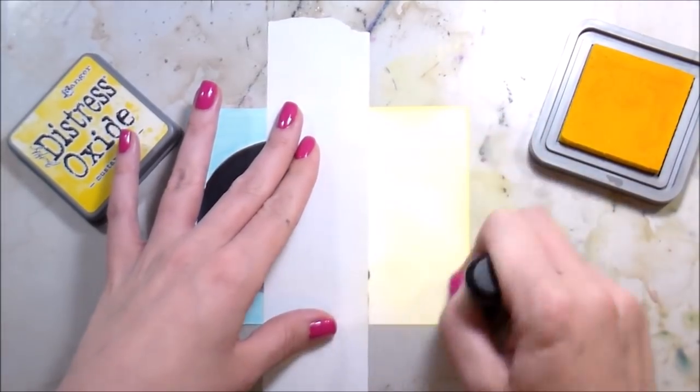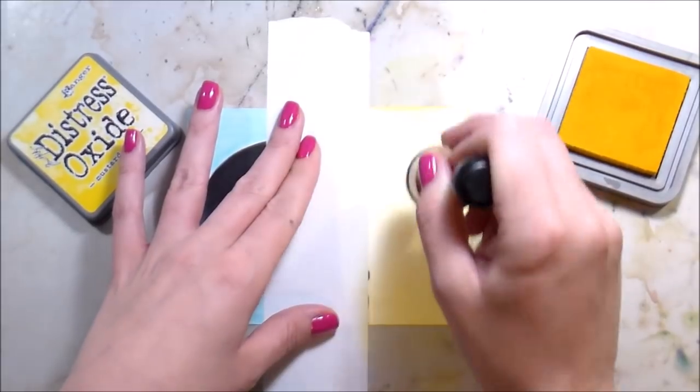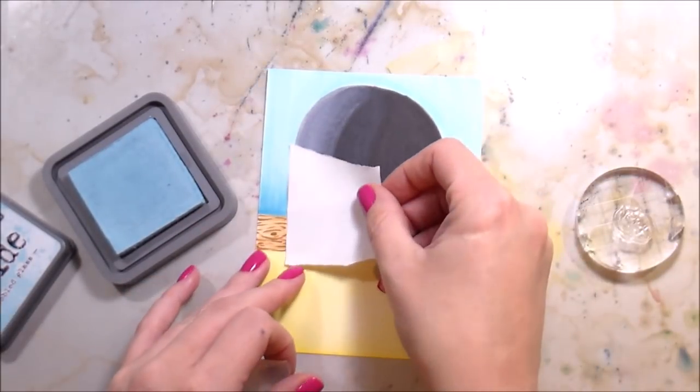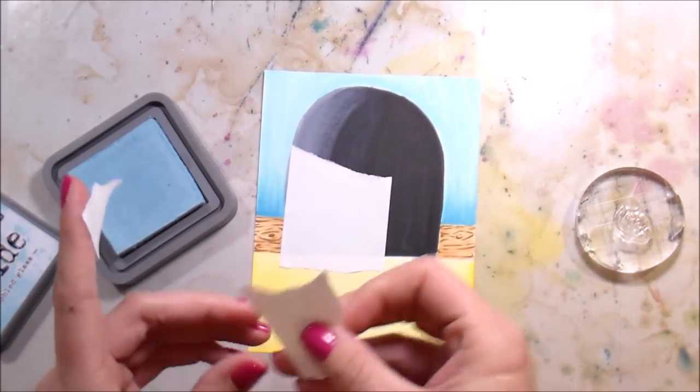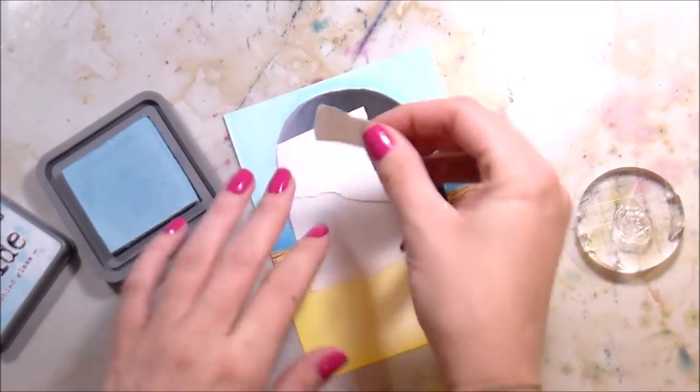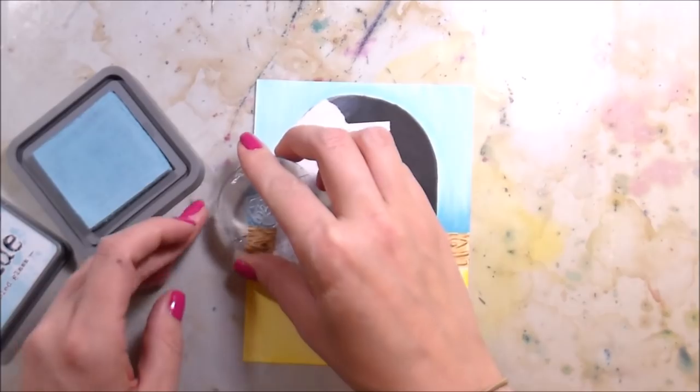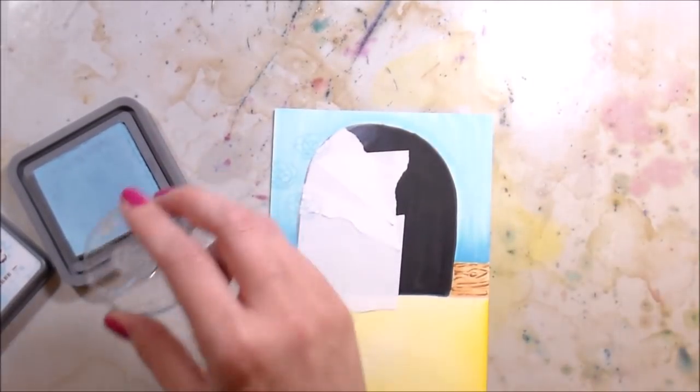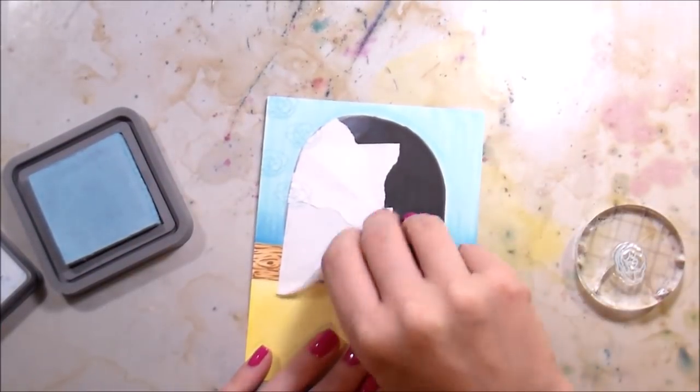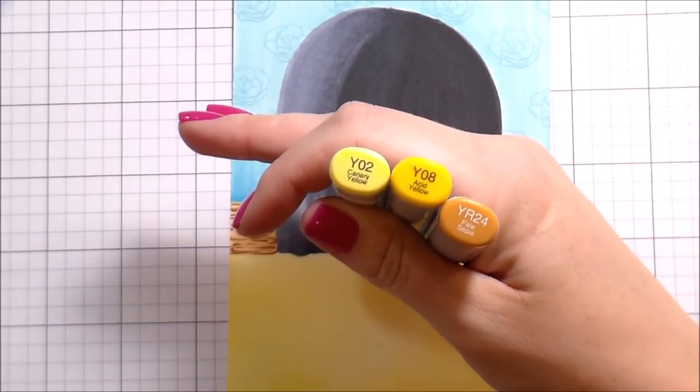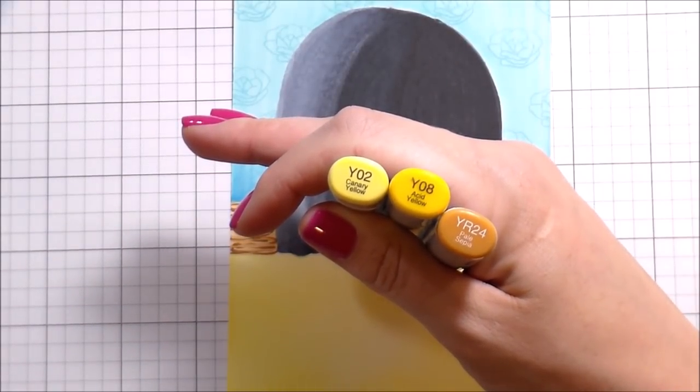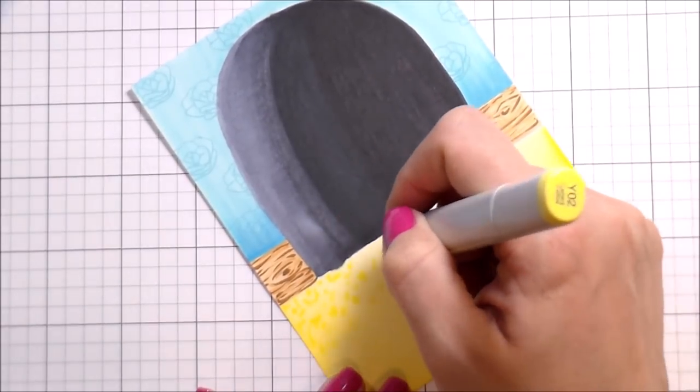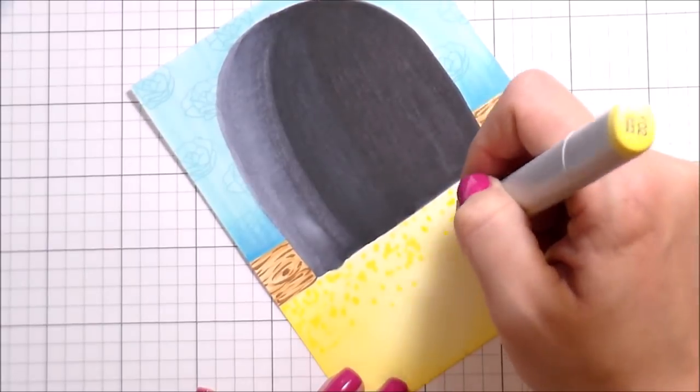To get a base color for my carpet, I'm using mustard seed distress oxide ink. You can use distress ink. You can use whatever other inks you want. I just like to have a base so I don't have to use a bunch of copic ink. The other thing I'm going to do is use tumbled glass distress oxide. And this is how I'm going to create that wallpaper look in the background. Any of the characters for Honey Bee always come with a bunch of really fun accessories. And so there's a flower in May's set. And so I thought that would be perfect to create some wallpaper.